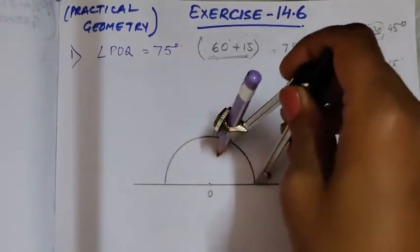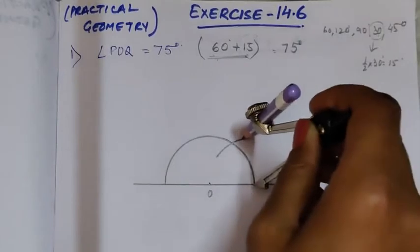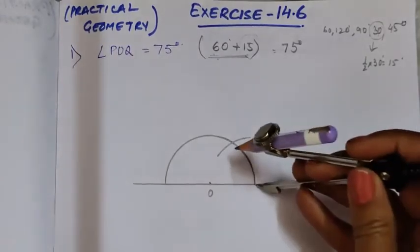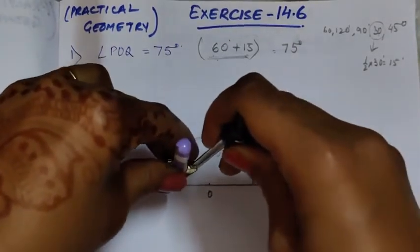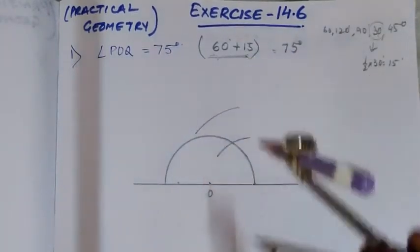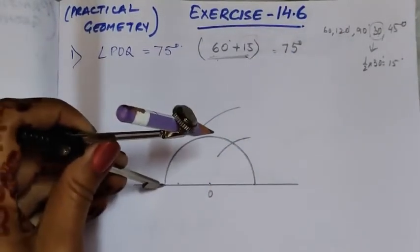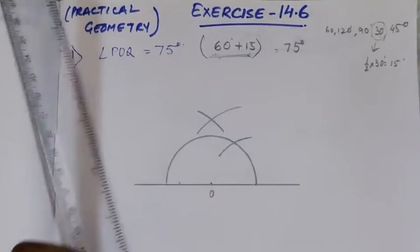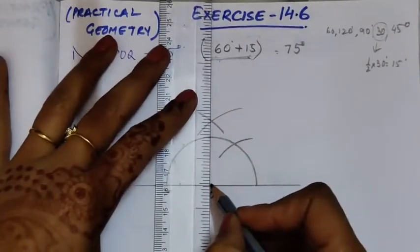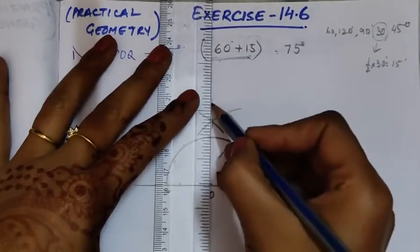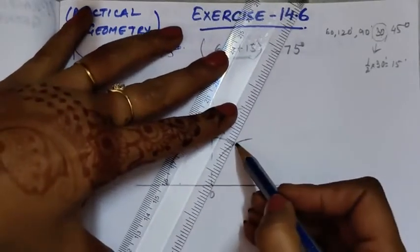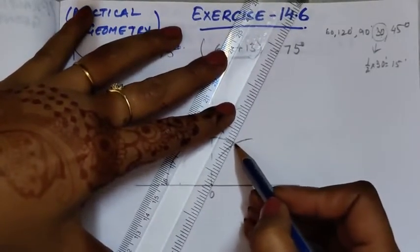This is the 60 degree arc. Next, let us draw 90 degrees to this figure. This is 90 degrees. Now let us join these two lines with a dotted line — we don't require this line permanently because we have to construct 60 plus 15, that is 75 degrees.